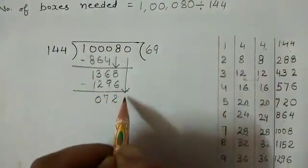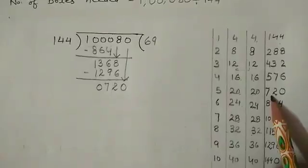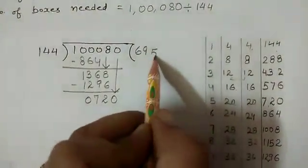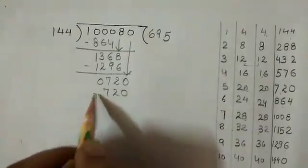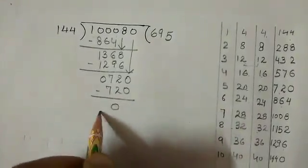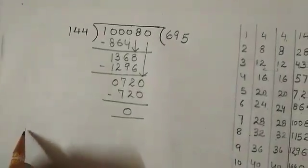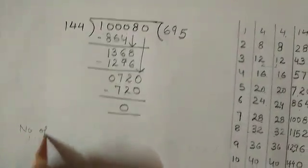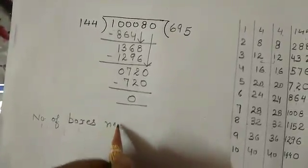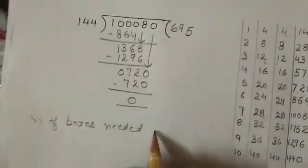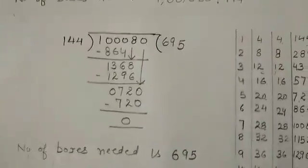Now note down your next number, 720. This is the 5th multiple. Again, do the subtraction. So, the number of boxes needed is 695. Okay, fine.